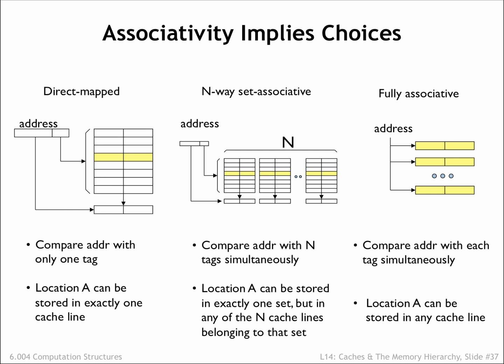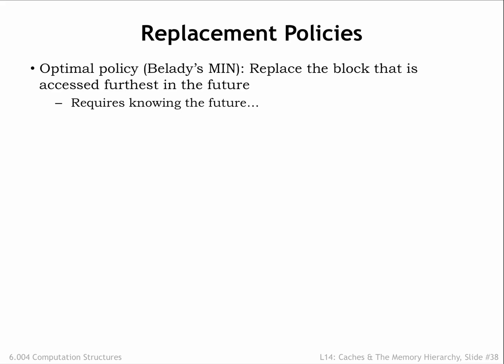There's one final issue to resolve with set associative and fully associative caches. When there's a cache miss, which cache line should be chosen to hold the data that will be fetched from main memory? That's not an issue with direct map caches, since each data block can only be held in one particular cache line determined by its address. But in N-way set associative caches, there are N possible cache lines to choose from. Our goal is to choose to replace the cache line which will minimize the impact on the hit ratio in the future. The optimal choice is to replace the block that is accessed furthest in the future, or perhaps is never accessed again — but that requires knowing the future!